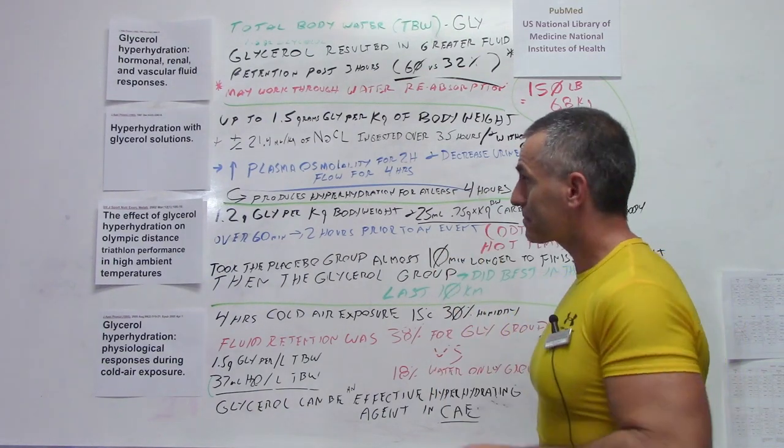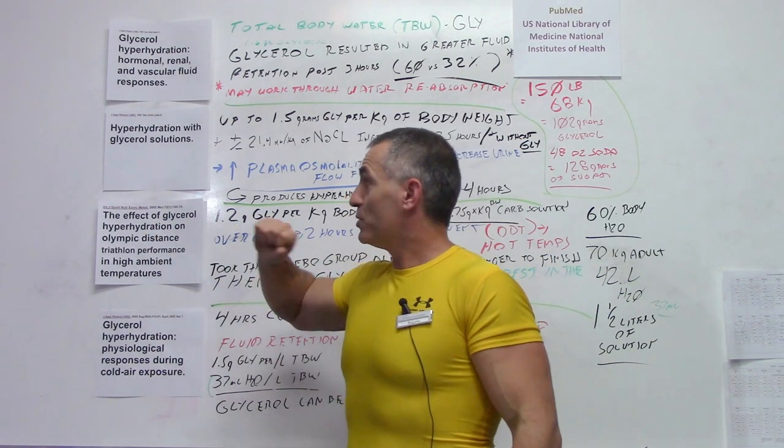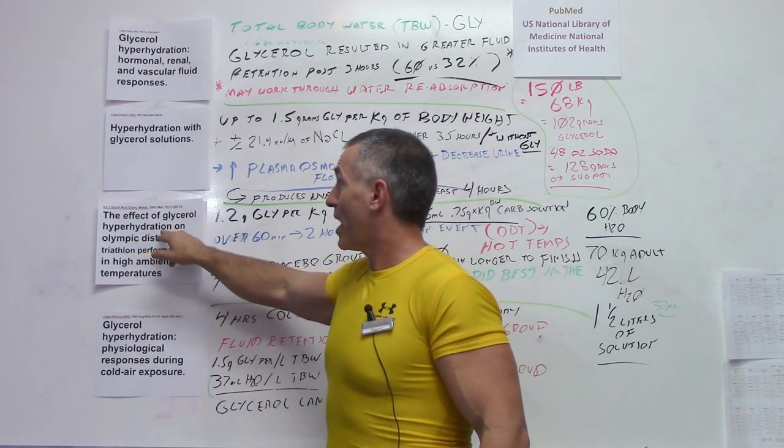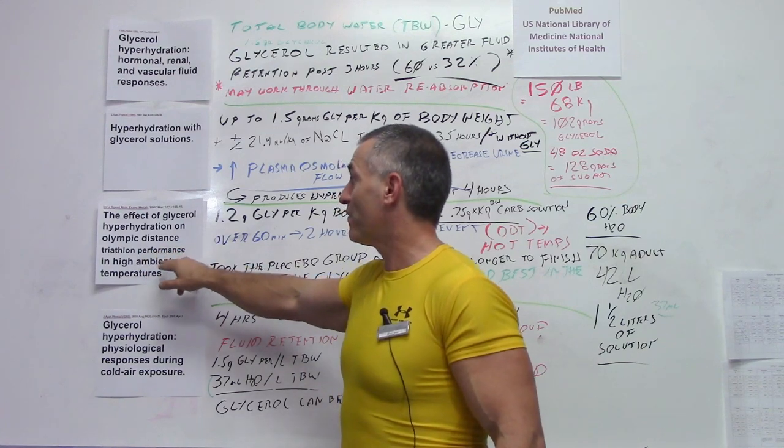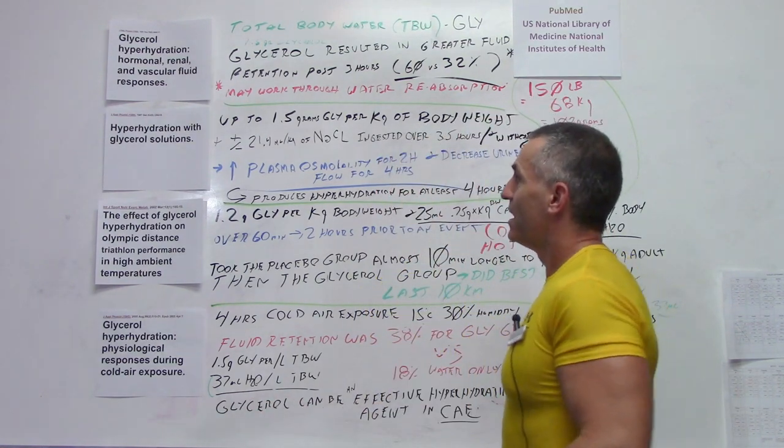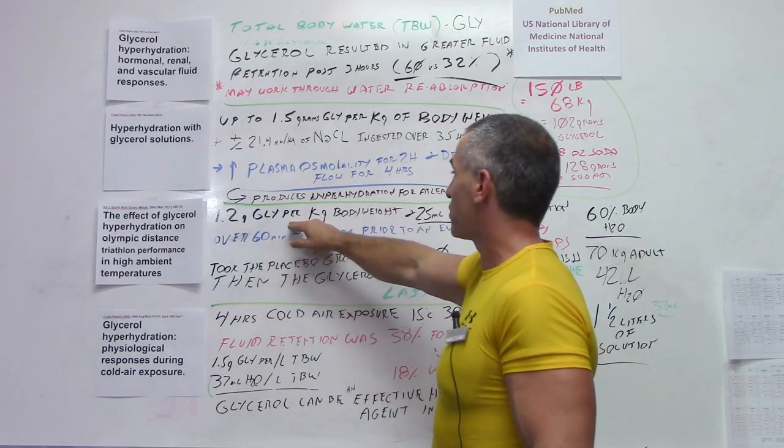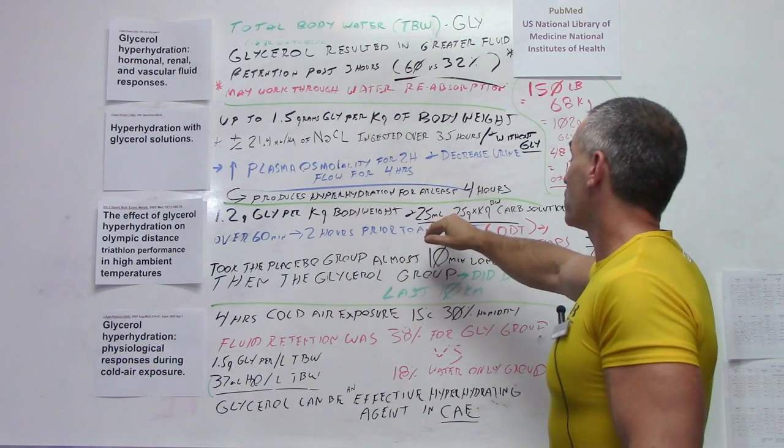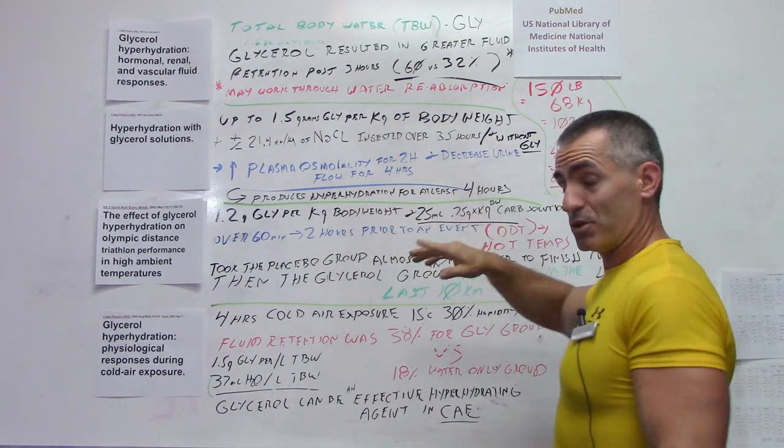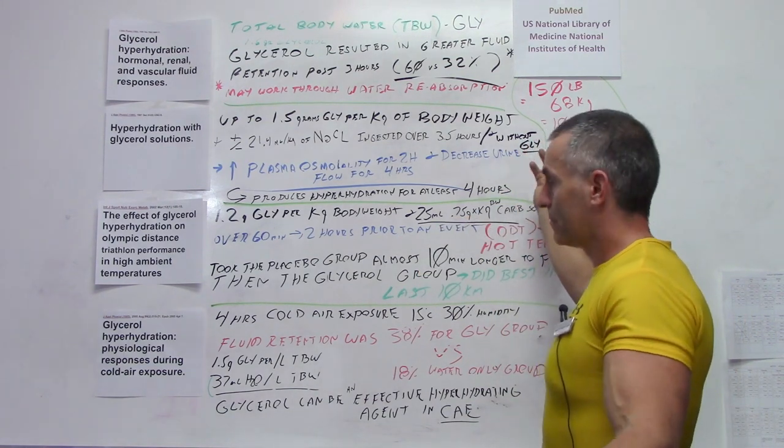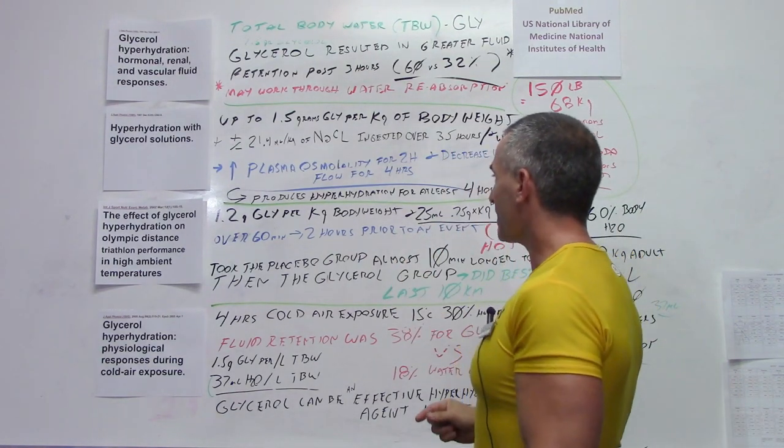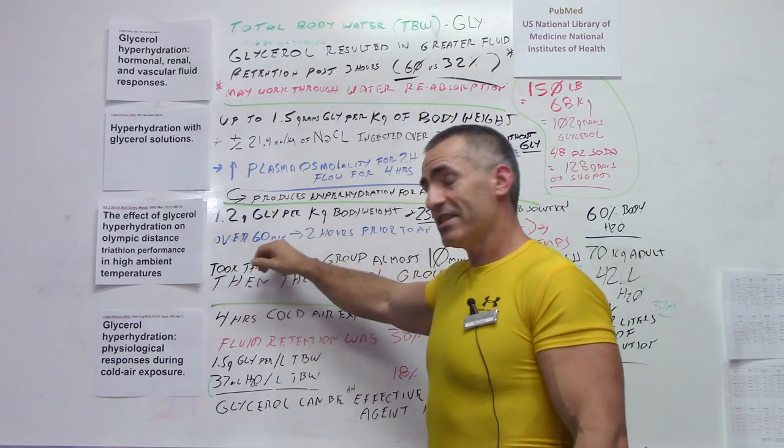Then we go to the performance aspect. This is kind of cool. This was done in 2002, the International Journal of Sports Nutrition Exercise and Metabolism: The Effect of Glycerol Hyperhydration on Olympic Distance Triathlon Performance in High Ambient Temperatures, meaning it's really hot in scientific terms. They went by a kilogram of body weight, 1.2 grams of glycerol per kilogram of body weight for about 25 milliliters of water, mixed in with a carb solution. The carb solution in this study was Gatorade. They had them drink the glycerol substance over 60 minutes.